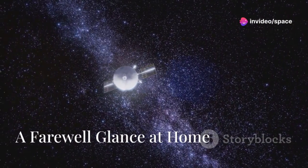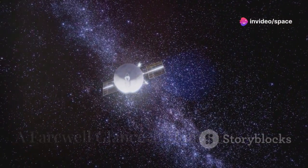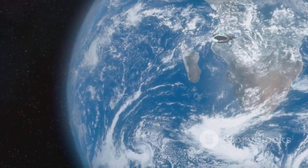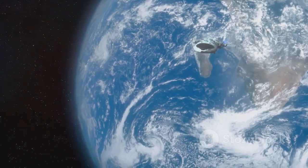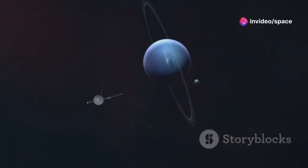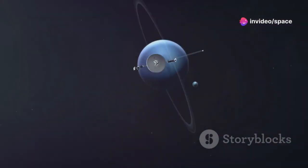On February 14th, 1990, Voyager 1 turned its cameras back towards Earth. From a distance of approximately 6 billion kilometers, Earth appeared as a tiny pale blue dot suspended in a sunbeam. This iconic image, known as the pale blue dot, became a powerful symbol of our planet's fragility and interconnectedness.